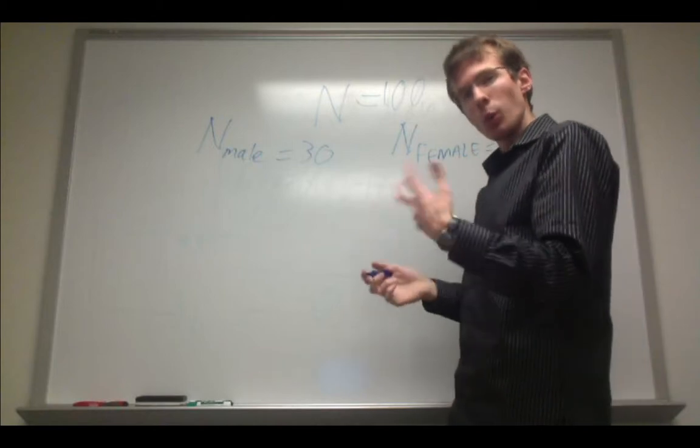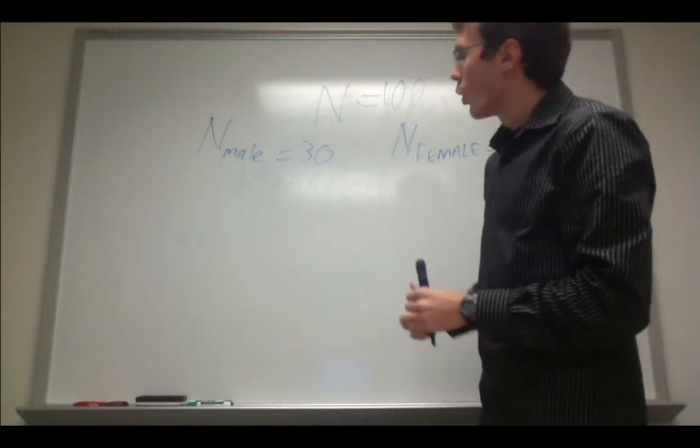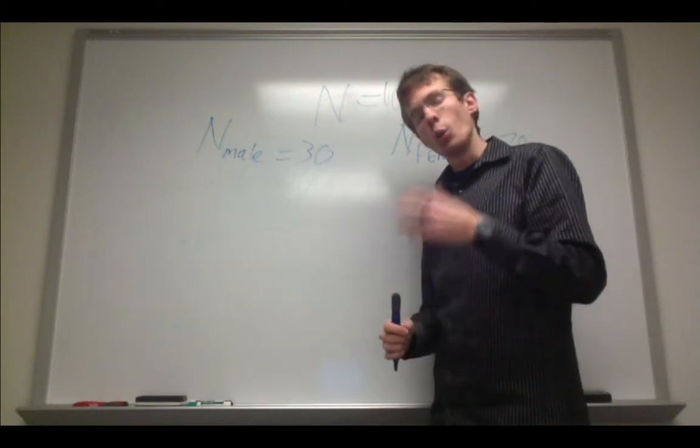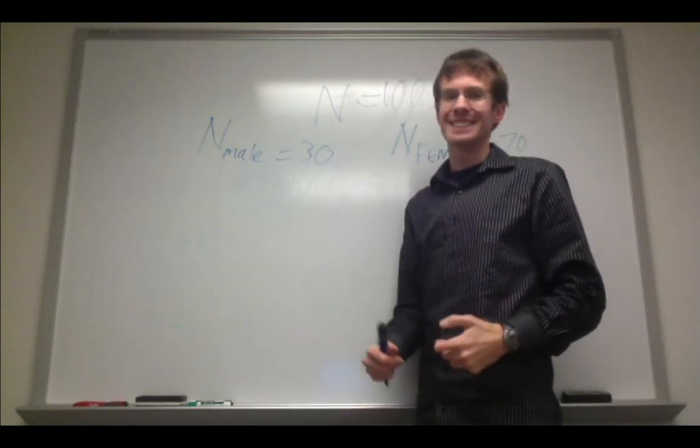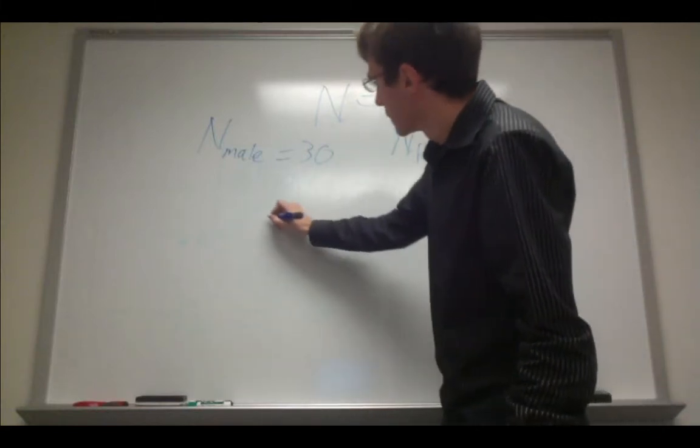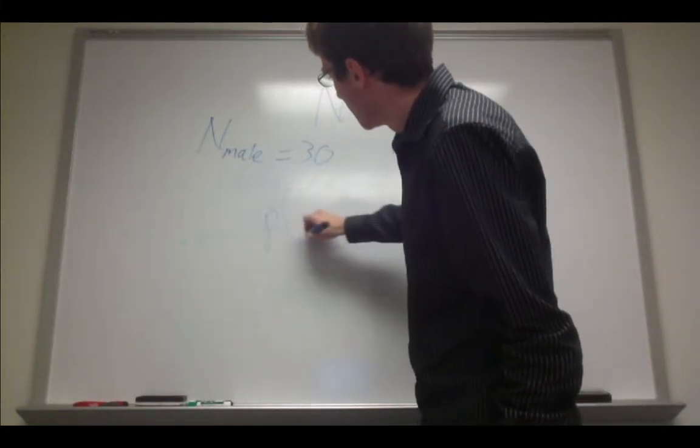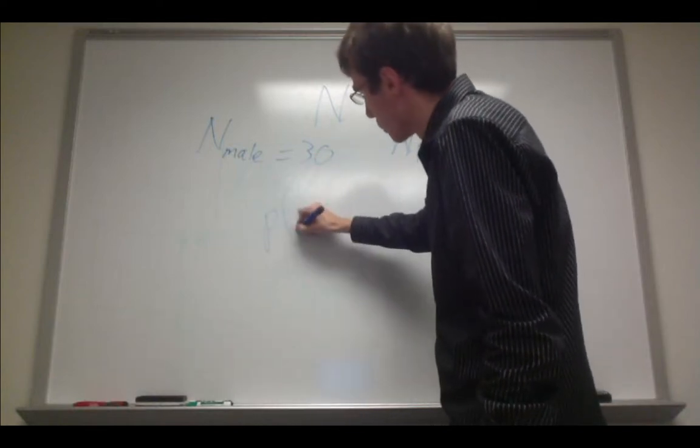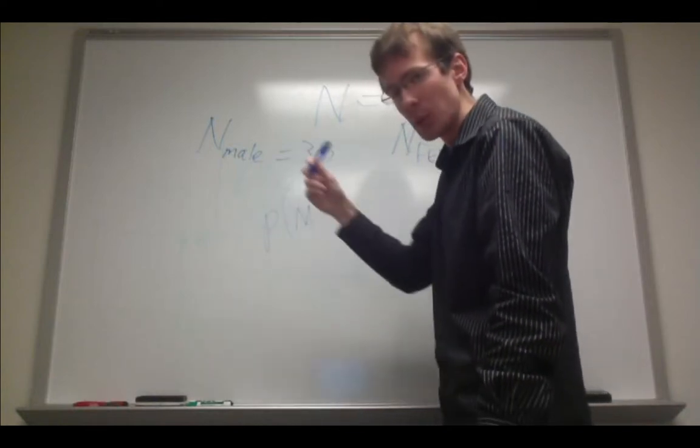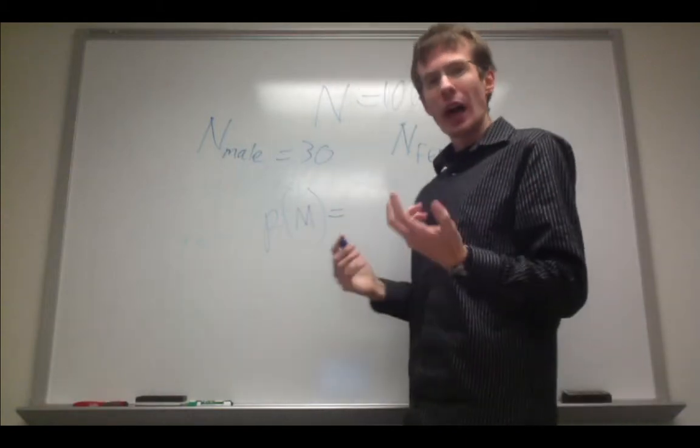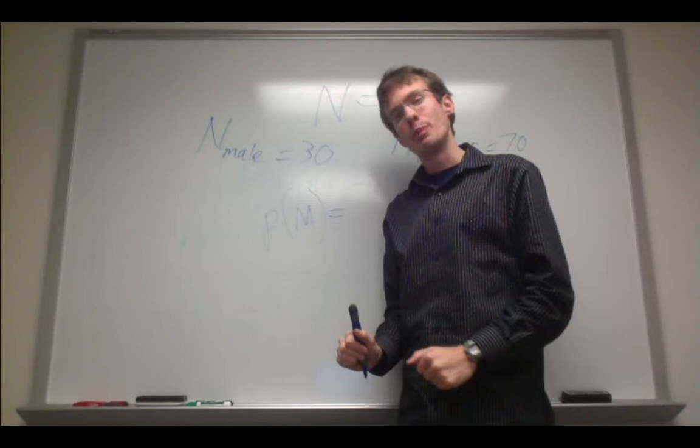And I want to know what is the probability, if I draw one individual at random from this sample of 100, what is the probability of selecting a male? In this case, we define this as P, and then in parentheses, the event of interest, so male, I'm just going to represent that with M, equals the number of successful outcomes over the total number of possible outcomes.